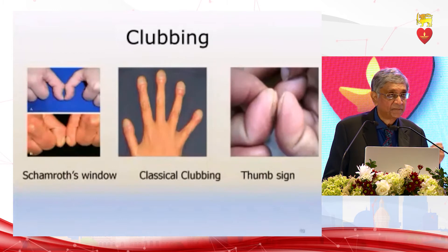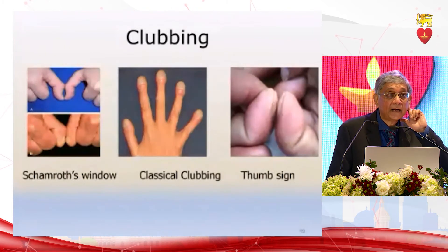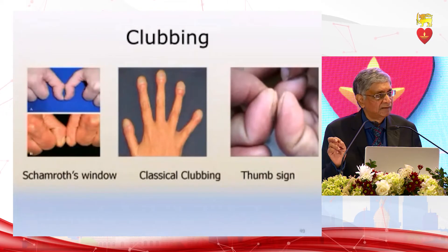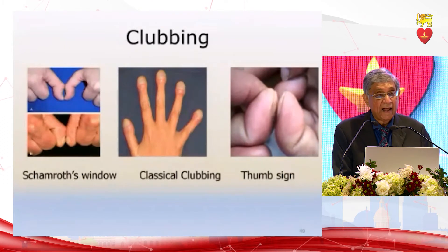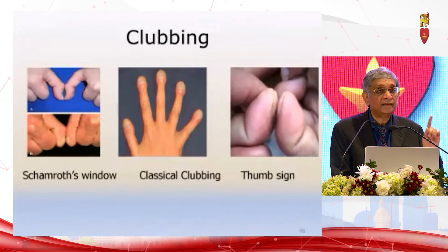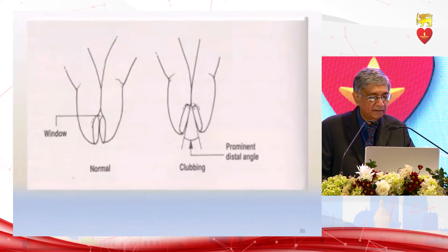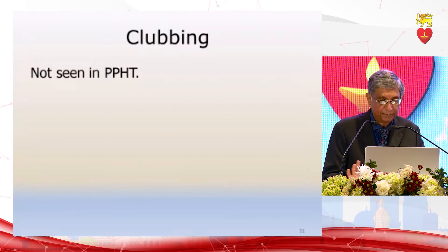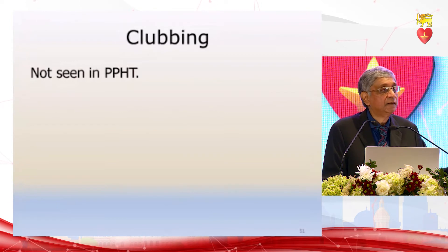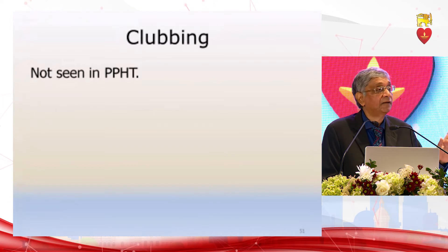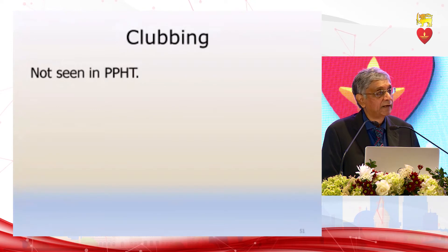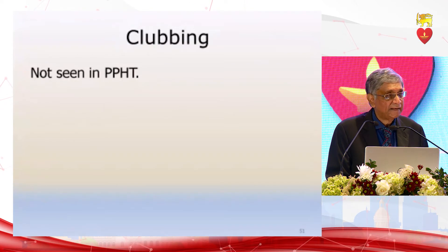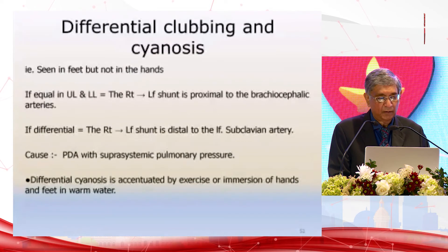In a small child or in infective endocarditis, if you want to look for clubbing as an initial sign, it first appears in the thumb. If you are in doubt, it is the thumb that should be investigated. The Schamroth's window disappears and then prominent distal angulation occurs in clubbing. Remember it is never seen in primary pulmonary hypertension — that is a very important negative physical sign, because when you have a patient with pulmonary hypertension and clubbing is absent, it is most likely primary pulmonary hypertension.